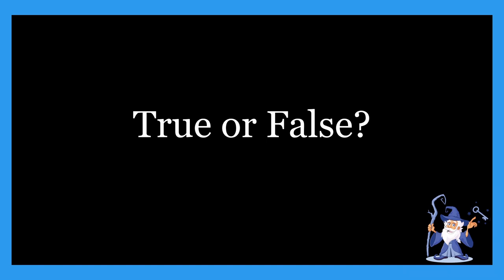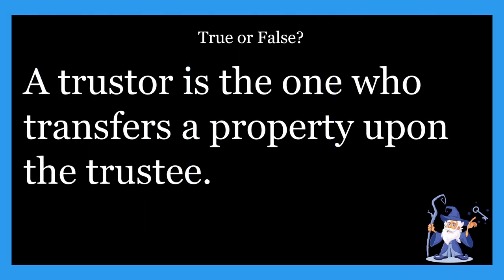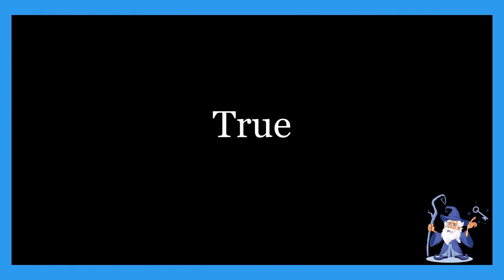Alright, without further ado, let's jump right into it. So the first true or false question: a truster is the one who transfers a property upon the trustee. The answer for that one is true. The first party, the truster or settler, transfers a property upon the second party for the benefit of the third party, the beneficiary. So that statement is true.